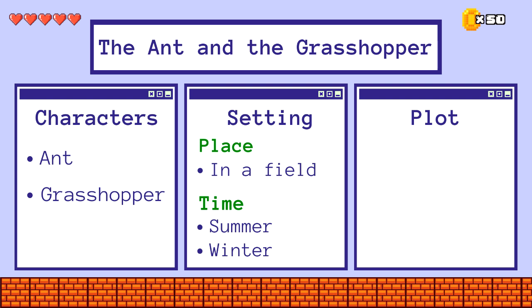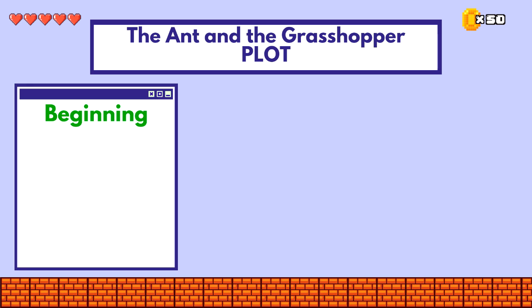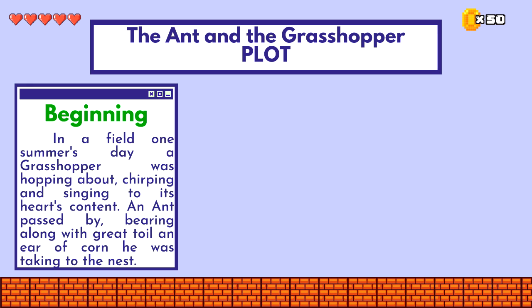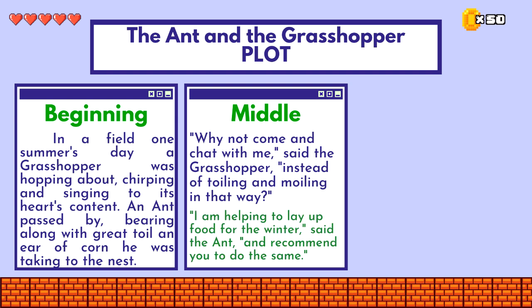What is the plot of the story? Let's discuss it part by part. What is the beginning of the plot or the story? This is when the setting was introduced, as well as the characters of the story. The grasshopper was singing while the ant was taking an ear of corn to the nest. The middle of the story would be when the grasshopper asked the ant to chat with him, but the ant refused, because the ant was preparing food for the winter.